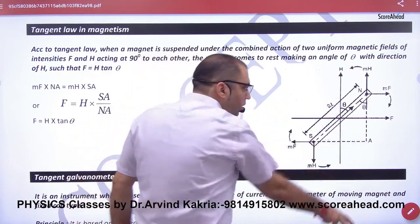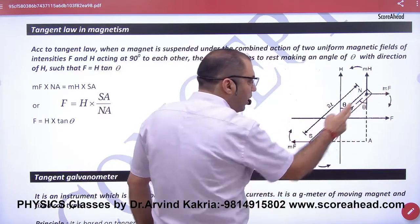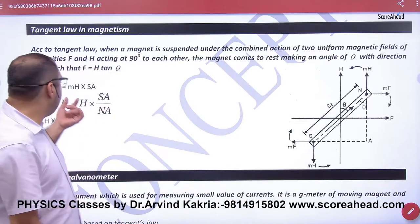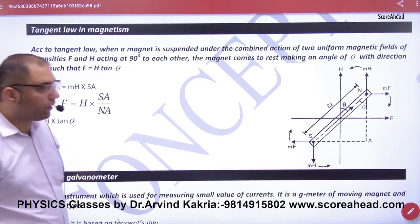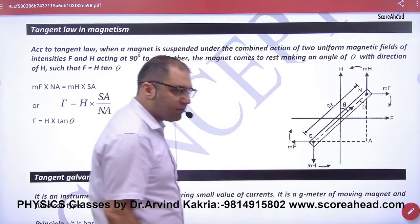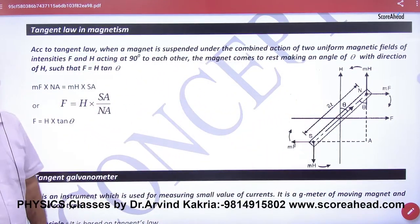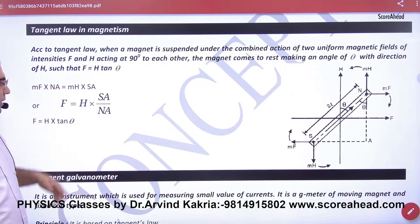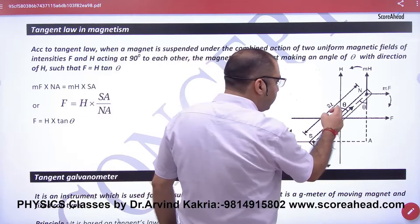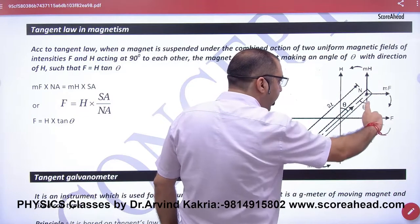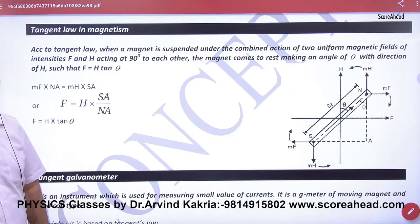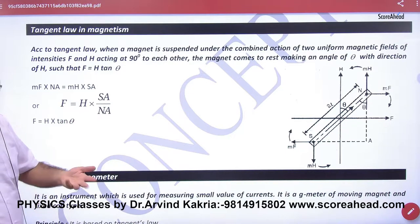So the clockwise torque: MF into perpendicular distance NA equals the anti-clockwise torque: MH into perpendicular distance SA. We equate NA and SA, and M cancels. The S values are equal. SA by NA is tan theta, so F into NA equals H into SA, giving F equals H into tan theta.